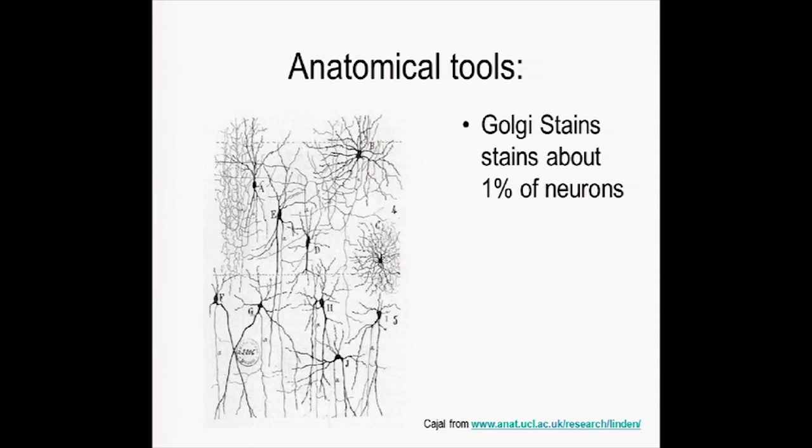The other is if you stain all the cells, well, the tissue is just black, and you don't see anything. So when you stain only 1%, you get nice contrast between a cell and the background. And so here is, this is not exactly how it would look, but what he would do is go look at reconstructions, draw them.